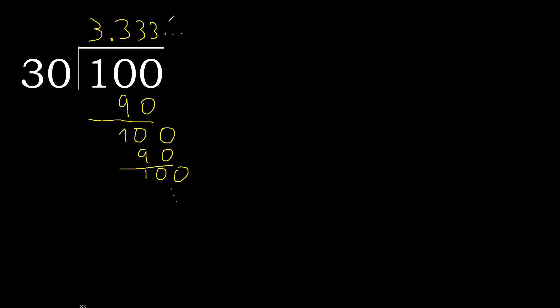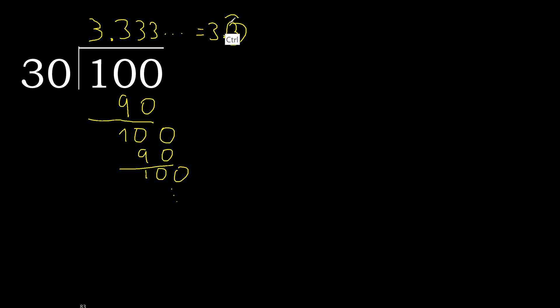100 divided by 30 is here, or after the point: 3 repeat. Therefore like this — 3 repeat, 3 repeat.